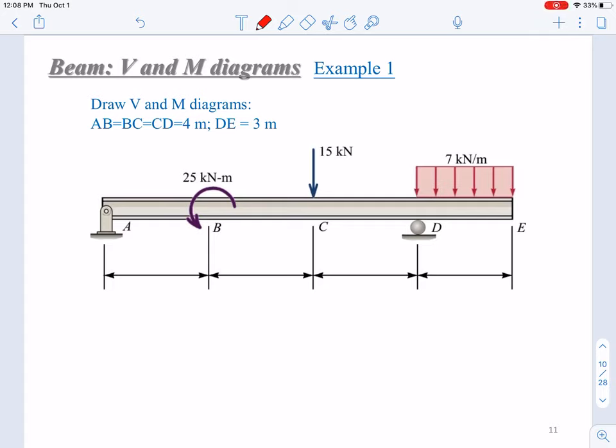In this example one, let's look at how to draw the V and M diagrams for an overhanging beam. This is an overhanging beam with the right end extended freely from a simply supported beam.